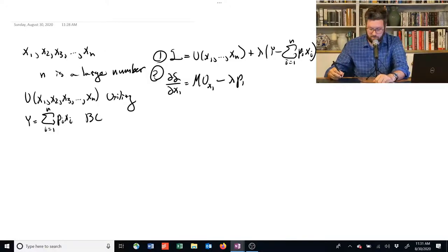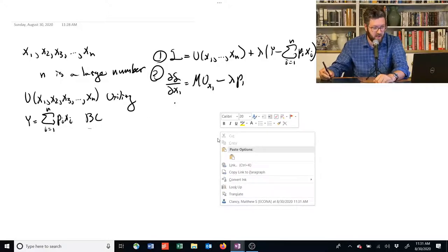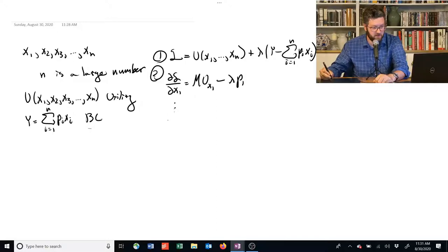And we do that again for X2, X3, XN. And I'll just do dashes to signify that we've done that hundreds of times. We have the marginal utility with respect to XN minus lambda times PN.